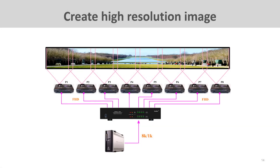This is a configuration of an 8K×1K display system. The 8K content is fed directly to the video wall controller, which splits the image with the necessary overlap and distributes it to the projectors. Compared to a PC-based solution, this is a much simpler configuration when your project requires high resolution.